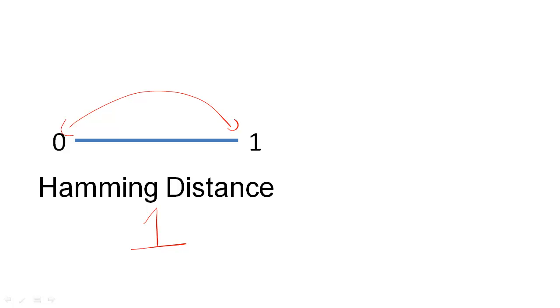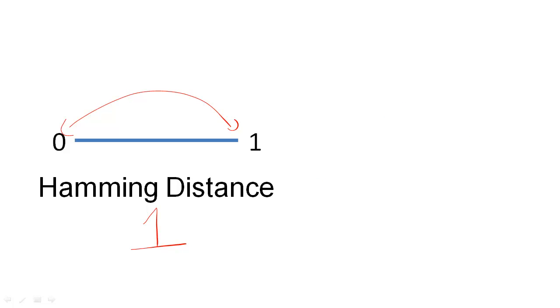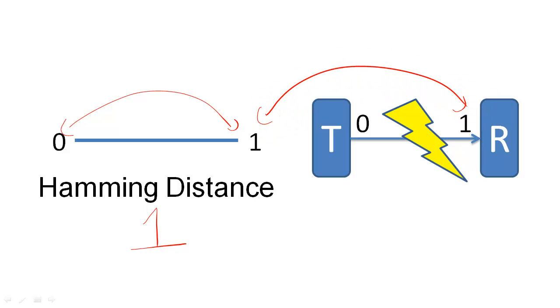When the Hamming distance of the code is 1, the receiving component can never detect an error, because if a bit changes, the receiving component will still receive a valid piece of information.